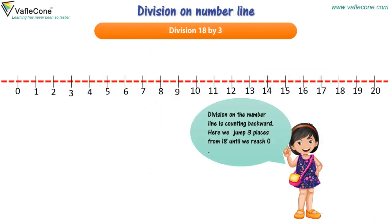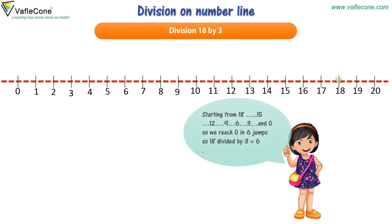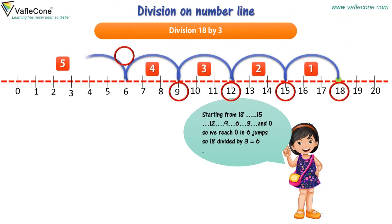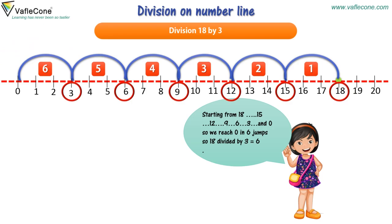Division on the number line is counting backward. Here, we jump three places from eighteen until we reach zero. Starting from eighteen: fifteen, twelve, nine, six, three, and zero. So we reach zero in six jumps. So eighteen divided by three is equal to six.